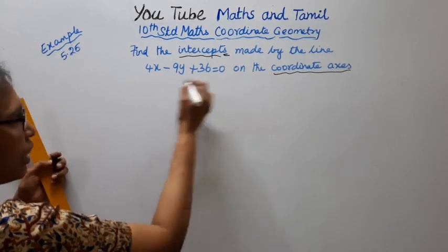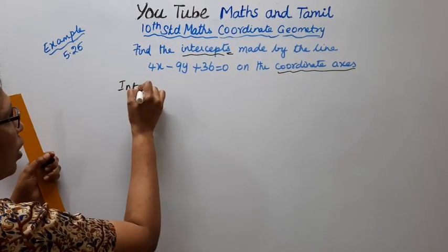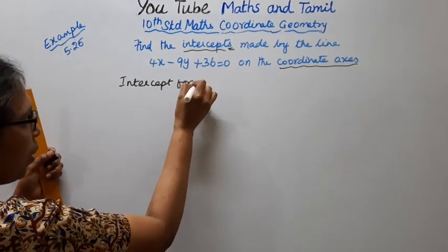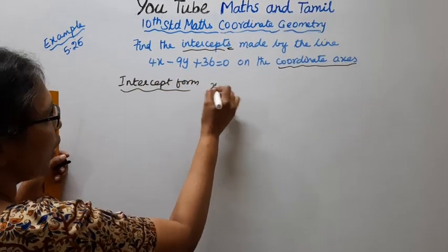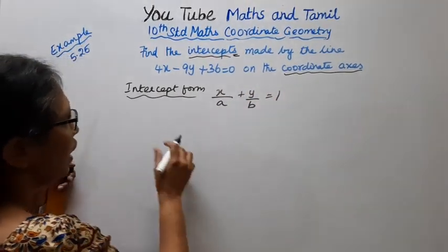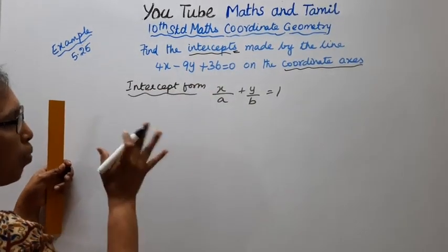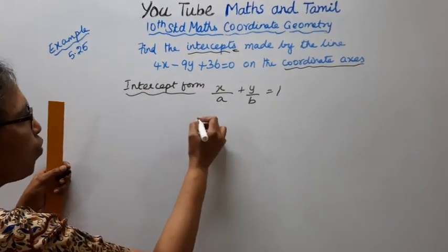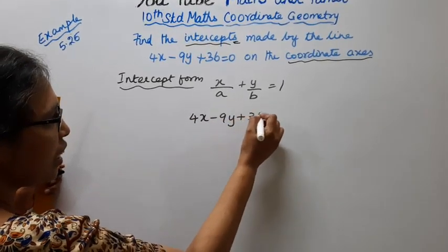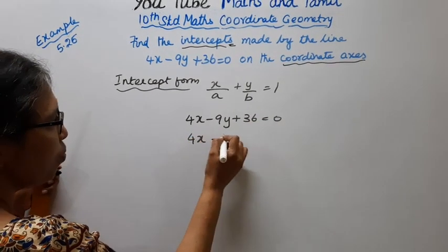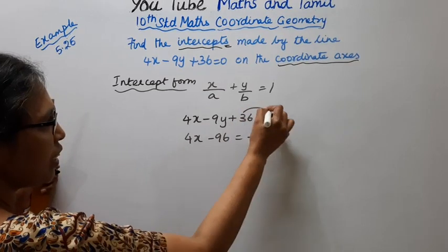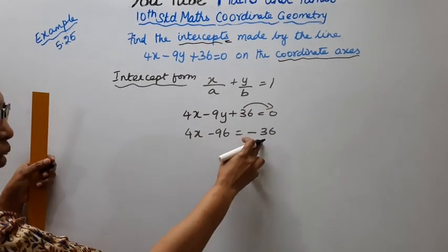For intercepts on coordinate axes, we'll use the intercept form. Starting with the equation 4x minus 9y plus 36 equal to 0, we move the 36 to get 4x minus 9y equal to minus 36.